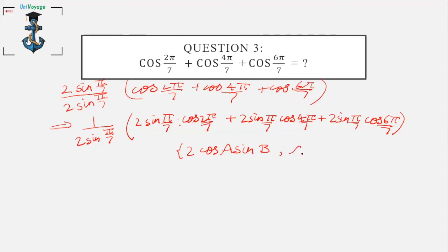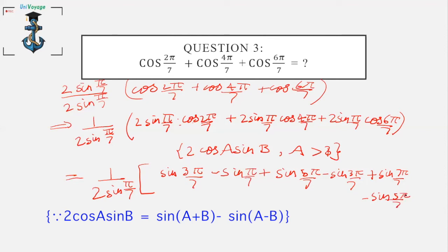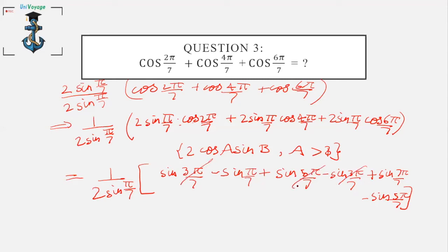Using 2cosA·sinB with A > B, we write this as (1/2sin(π/7))·[sin(3π/7) - sin(π/7) + sin(5π/7) - sin(3π/7) + sin(7π/7) - sin(5π/7)]. The sin(3π/7) and sin(5π/7) terms cancel each other.